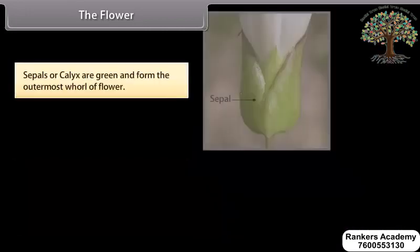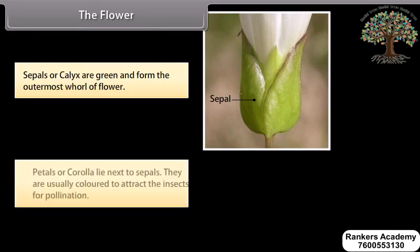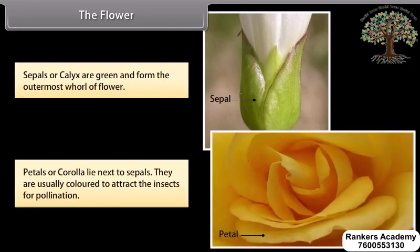Sepals, or calyx, are green and form the outermost whorl of the flower. Petals, or corolla, lie next to the sepals and are usually colored to attract insects for pollination.